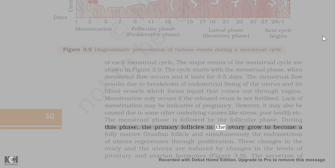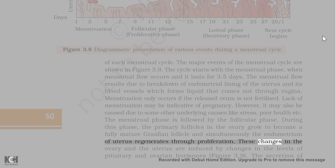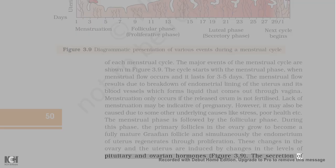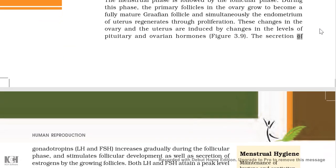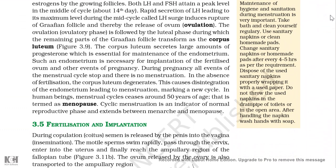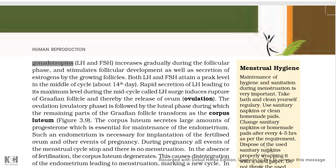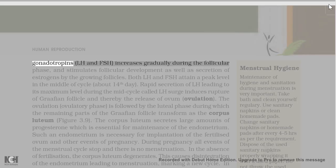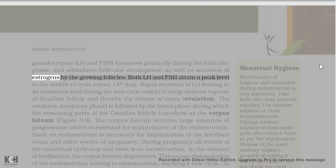The menstrual phase is followed by the follicular phase. During this phase, the primary follicles in the ovary grow to become a fully mature Graafian follicle and simultaneously the endometrium of the uterus regenerates through proliferation. These changes in the ovary and the uterus are induced by changes in the levels of pituitary and ovarian hormones. The secretion of gonadotropins (LH and FSH) increases gradually during the follicular phase and stimulates follicular development as well as secretion of estrogens by the growing follicles.